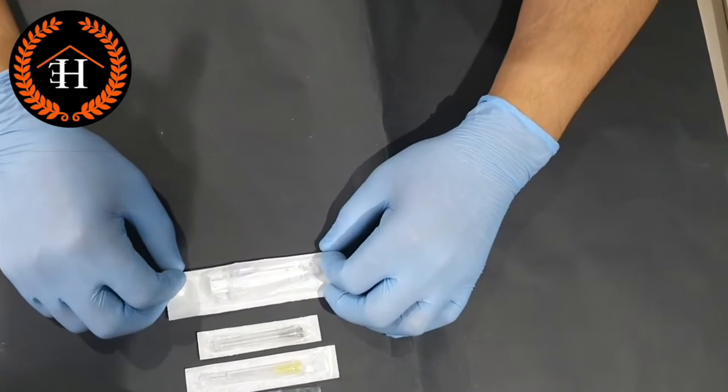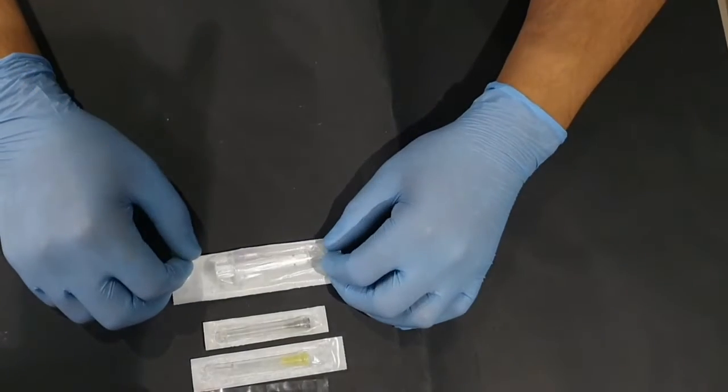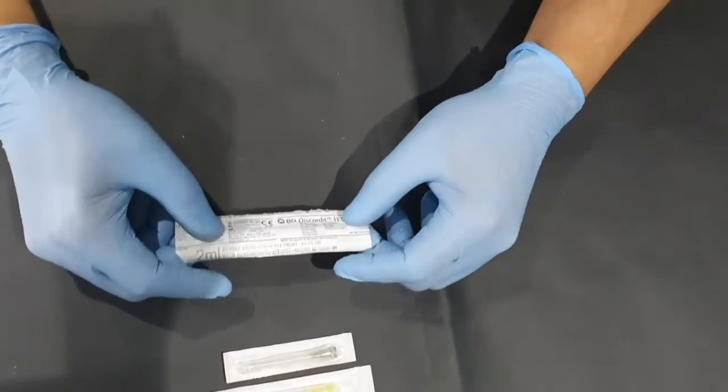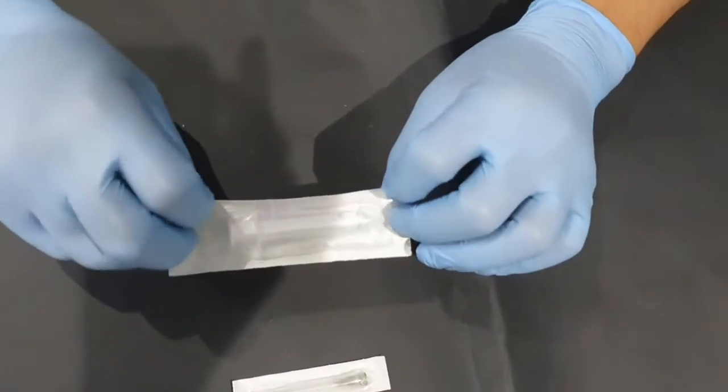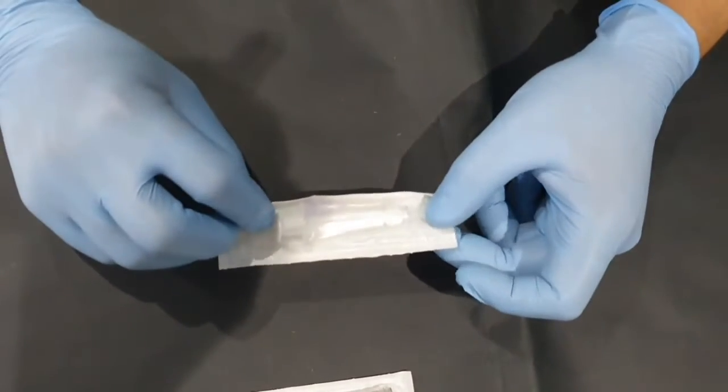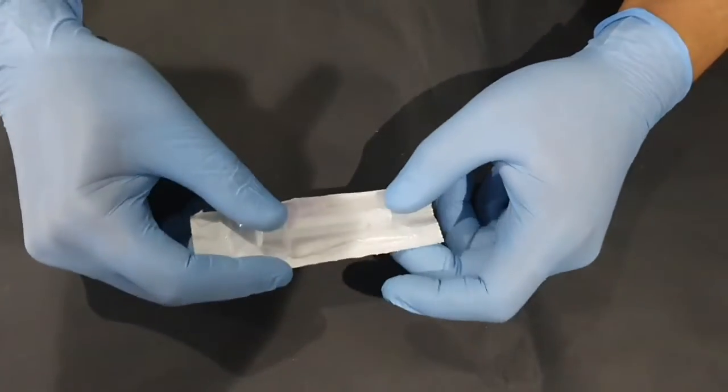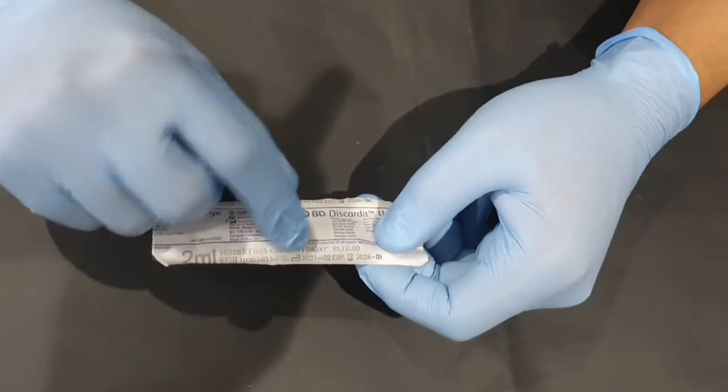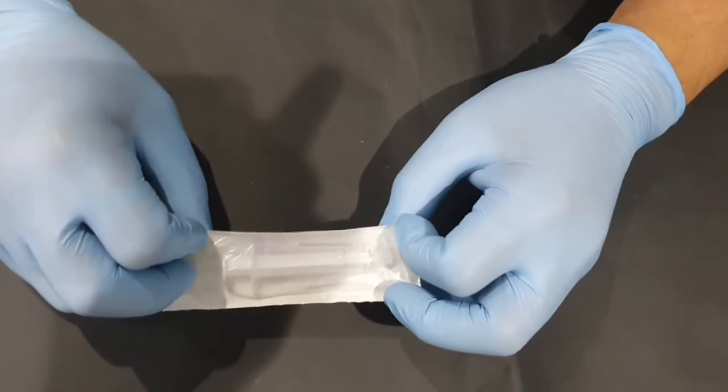So I have with me a set of four different types of needles which are routinely used in our clinical practices. One of them is a pre-sterile, pre-packaged set of needle and syringe. This has a large bore needle which is about 24 gauge and it's a beveled needle.